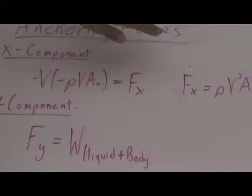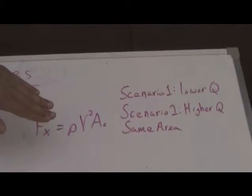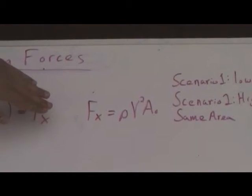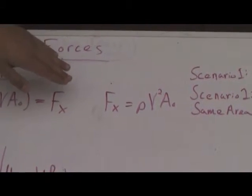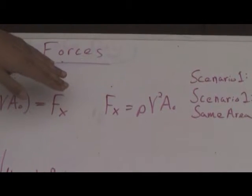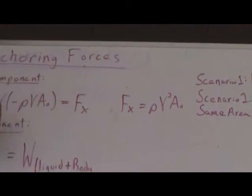Since in scenario one there's a lower flow rate and scenario two has a higher flow rate and both have the same area, that means the anchoring force in the second scenario would need to be larger than the anchoring force in the first scenario. That means we should predict that the second scenario is more likely to knock over the body.